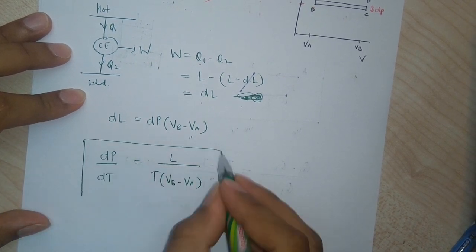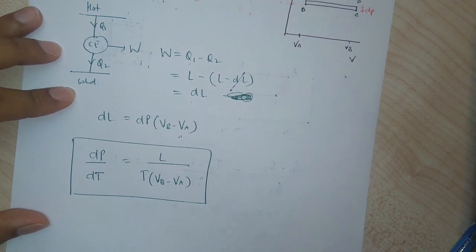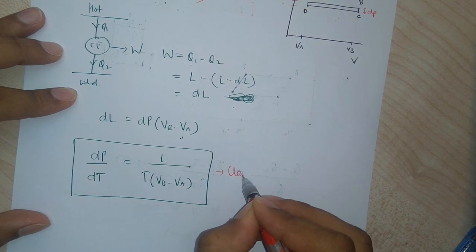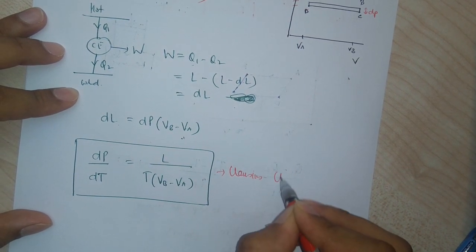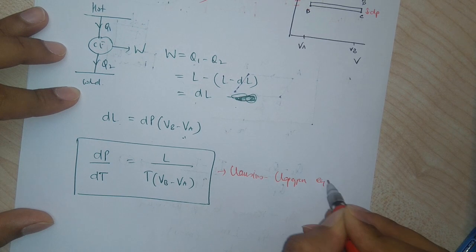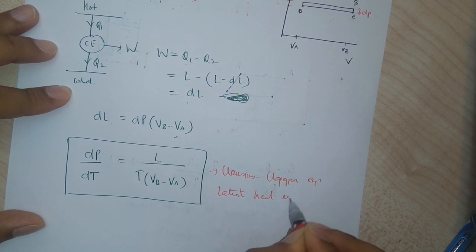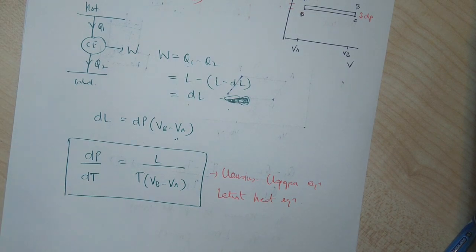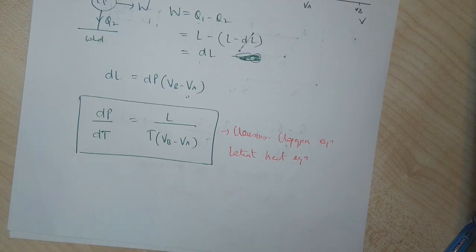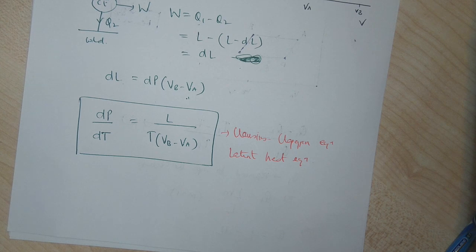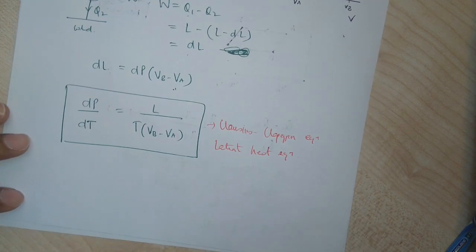This is the relation we wanted — it is the Clausius-Clapeyron equation, also called the latent heat equation. The significance of this equation is that it gives us how the melting point or the boiling point of a substance changes with change in pressure.